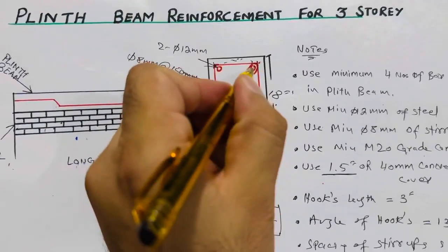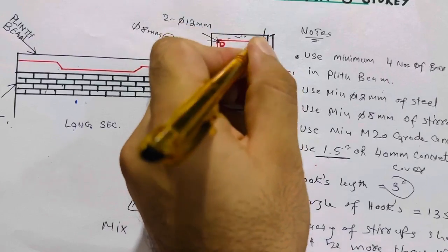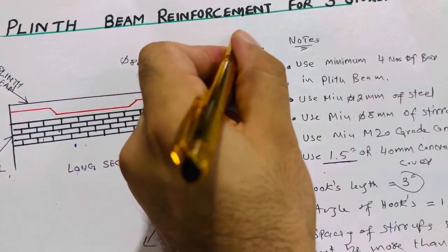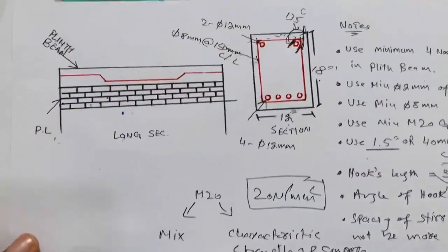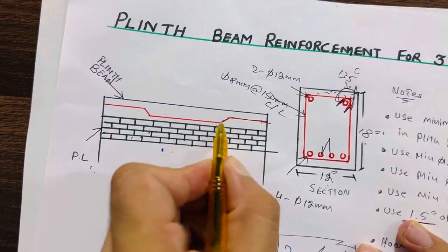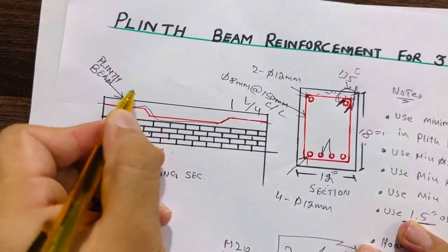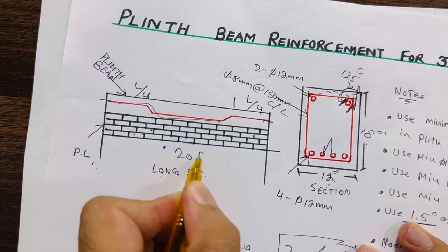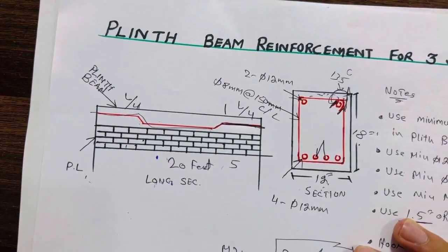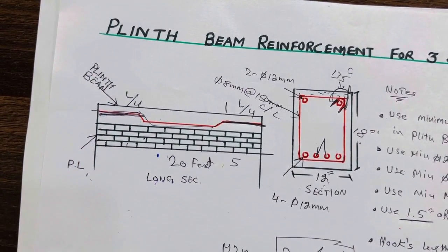These hooks should not be less than 3 inches and should be bent at 135 degrees — not 90 degrees — otherwise you will face more problems. These two bars here are crank bars. At the distance of L/4 from each support — suppose the span is up to 20 feet, so at 5 feet from each end — the crank bar should be provided. Extra steel rods can also be provided, but crank bars are more economical.